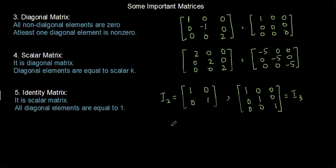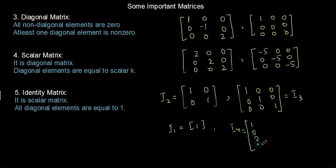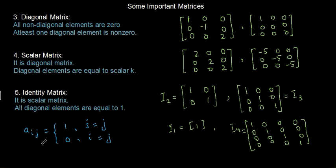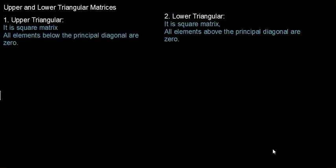The identity matrix of order 1 has a single element 1. The identity matrix of order 4, I4, has 1s on the diagonal and 0s elsewhere. The elements of the identity matrix can be written as Aij = 1 when i equals j and Aij = 0 when i does not equal j.